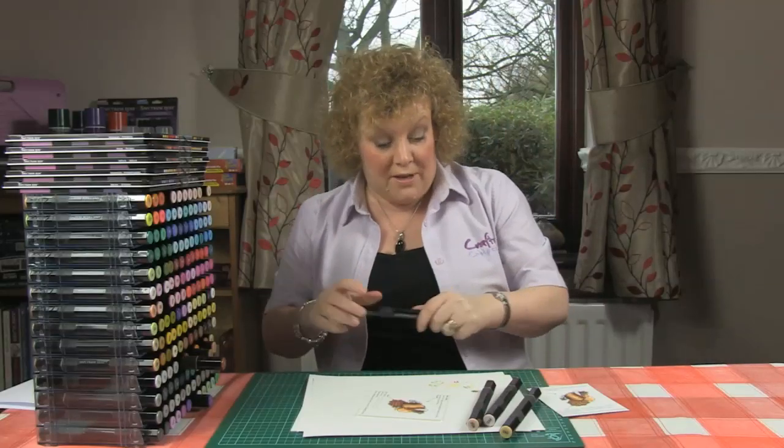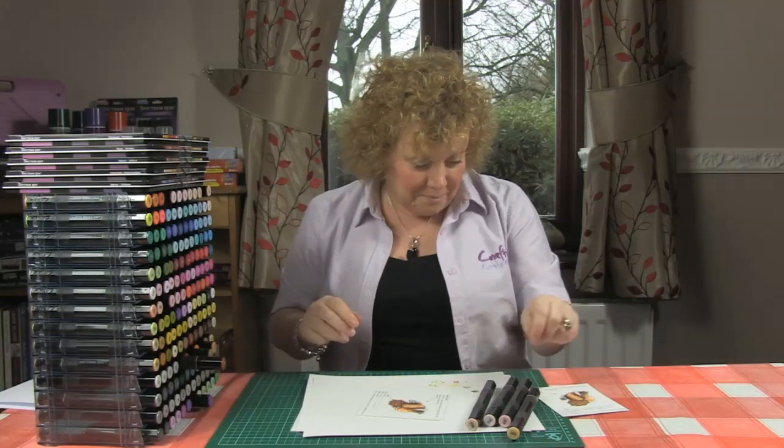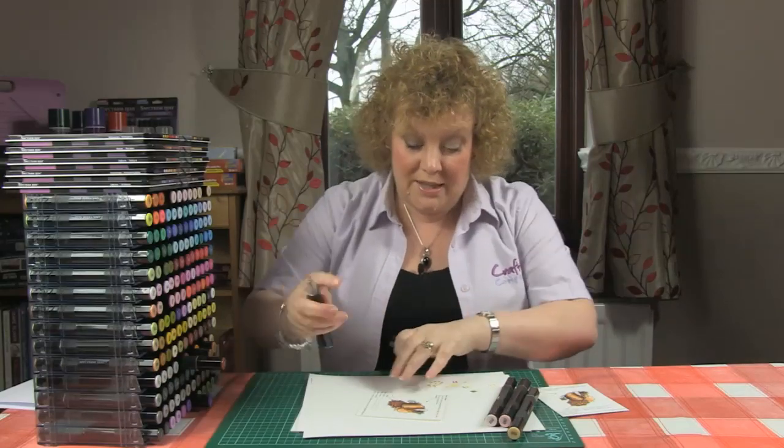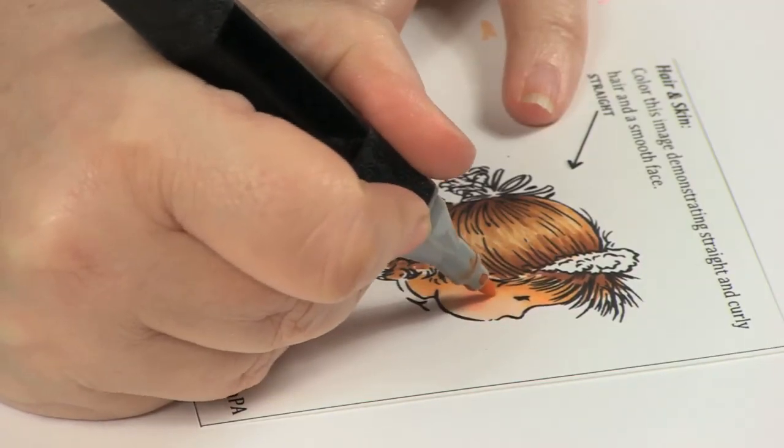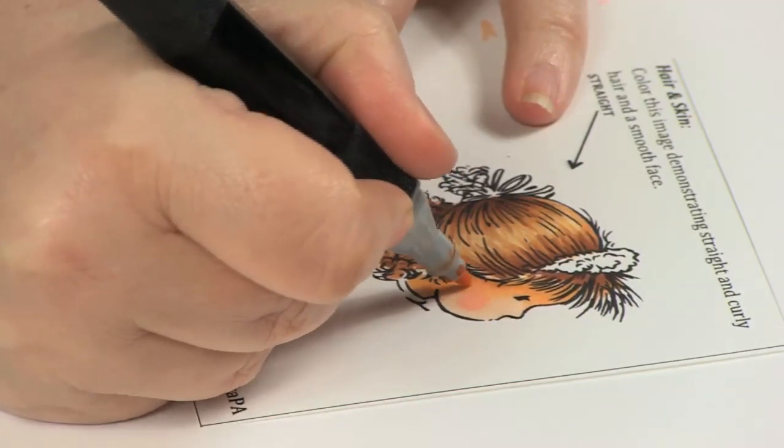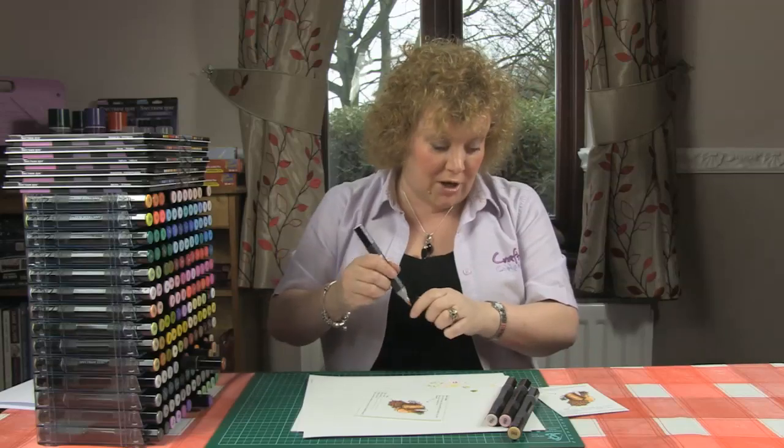To soften that, because we don't want her to look like Aunt Sally, we would use the FS9 again just to soften it in the hairline here and make it look more like a natural cheek color.